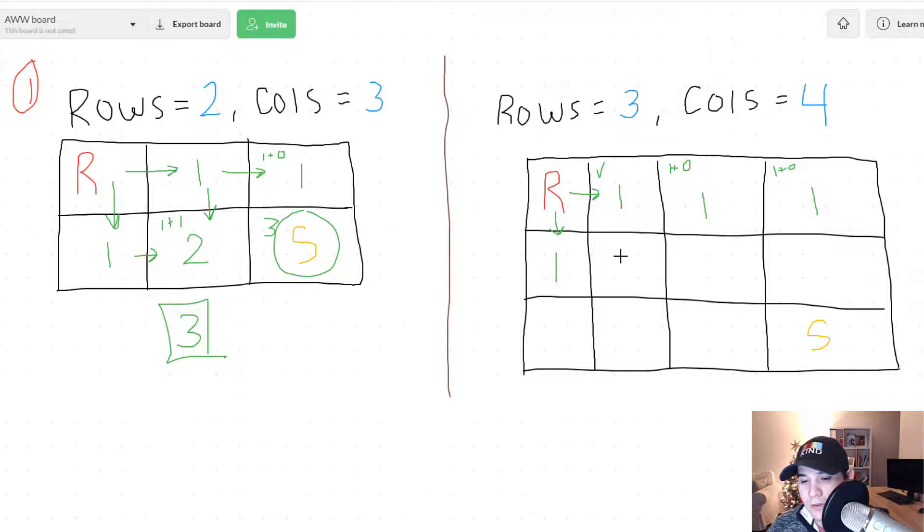And now right here we're going to look above us to look to the left of us. So this would be one plus one. So that would be two unique paths. So that comes from right here and then right here right.